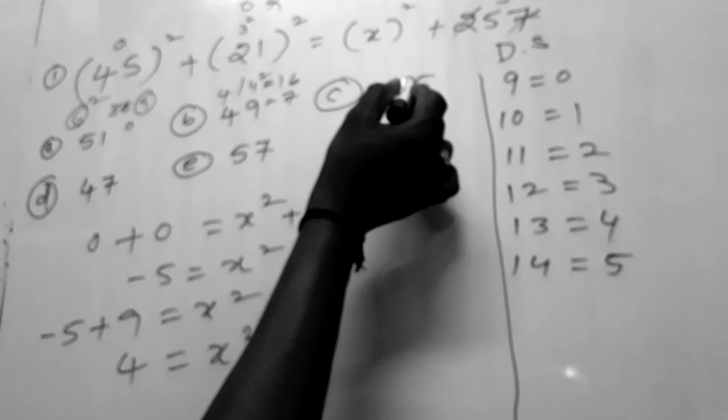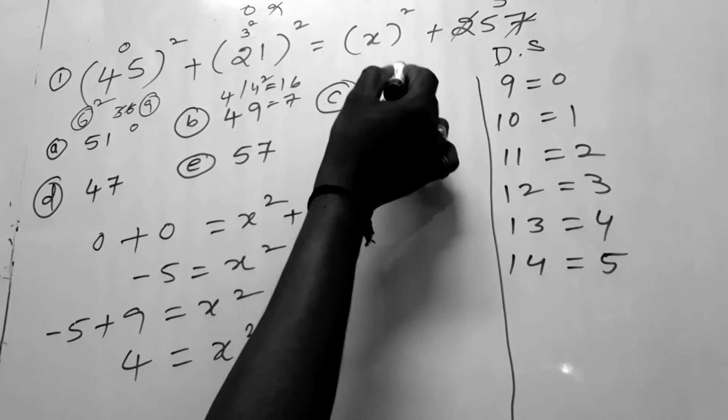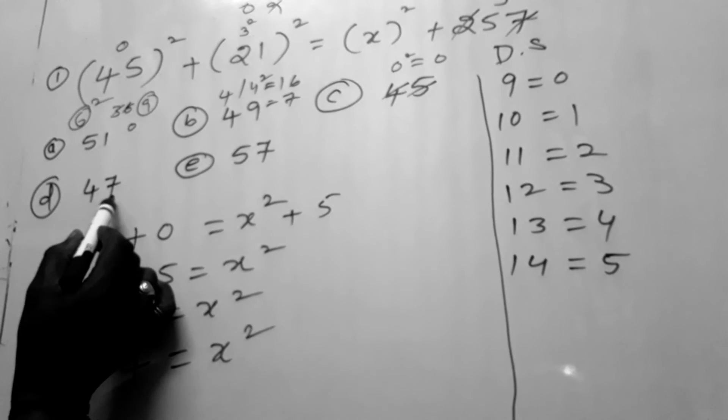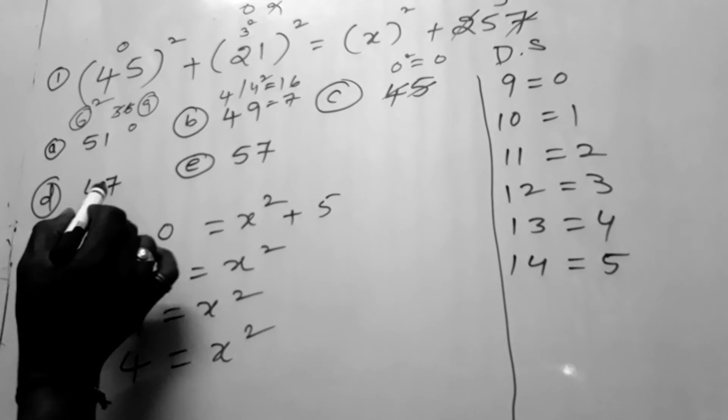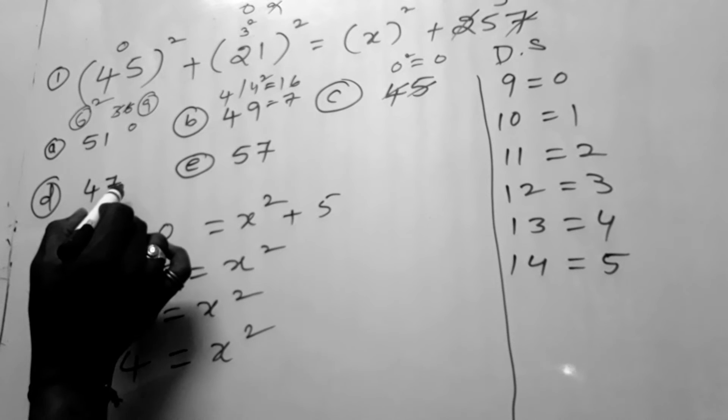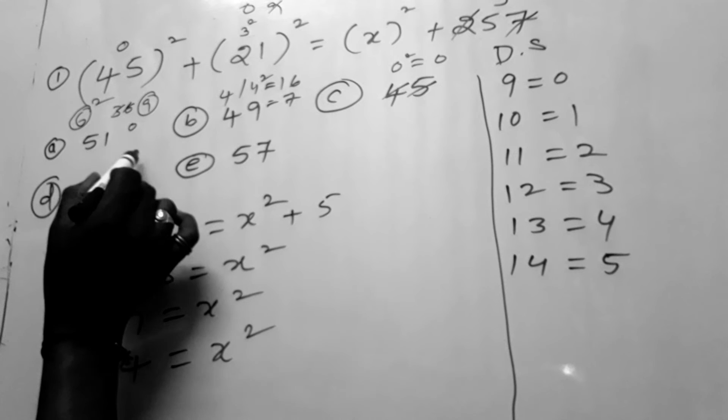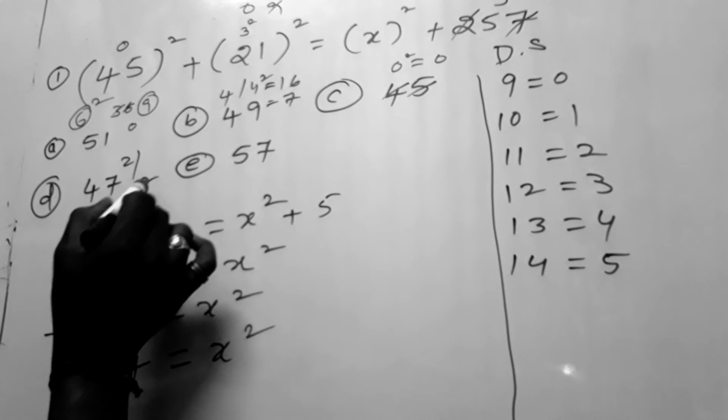4 and 5 together is 9. 9 means digital sum 0. 0 square is again 0. Here x square means 4 plus 7. 4 plus 7 is 11. 11 has digital sum 2. 1 plus 1 is 2 together. So 2 is equal to 2. 2 square is equal to 4.